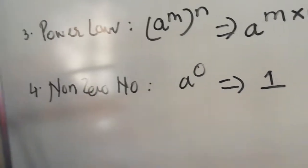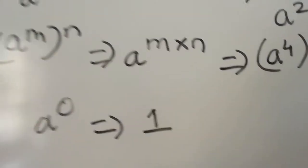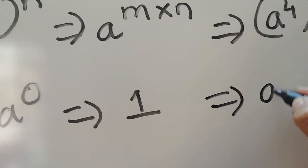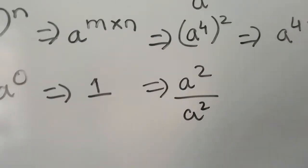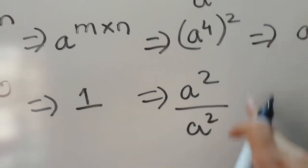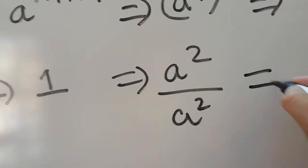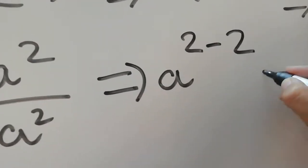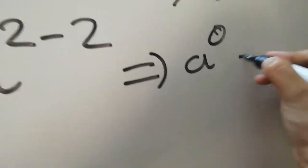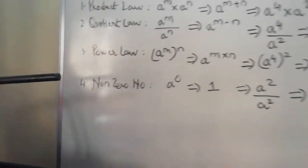Any base raised to 0 gives an answer of 1. For example, if it is a raised to 2 upon a raised to 2, this is quotient law — division, whose friend is subtraction. So it becomes a raised to 2 minus 2, which is a raised to 0, and the answer is equal to 1.